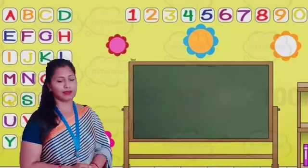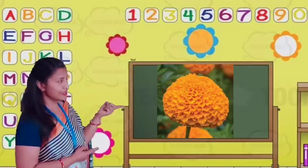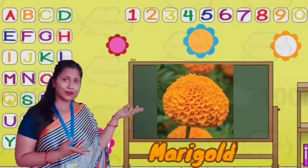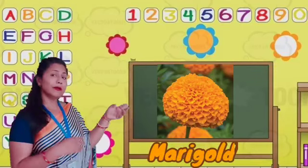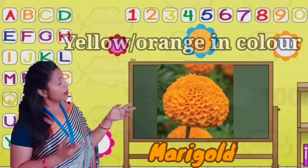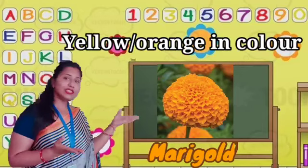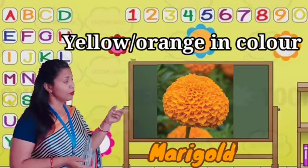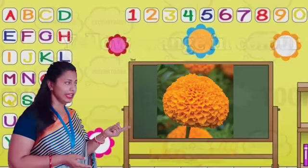Now, see, which picture is this? This is marigold. It is yellow and orange in color. It is found in both colors — orange and yellow.